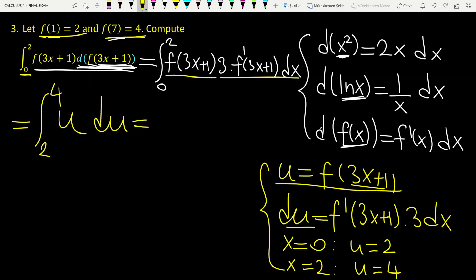So it's very easy to calculate this integral. This is u square over 2, integral from 2 to 4. If you calculate this, you have 16 minus 4 divided by 2, and this is equal to 6.